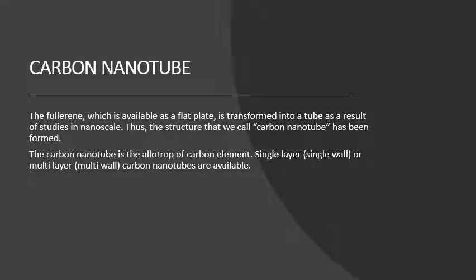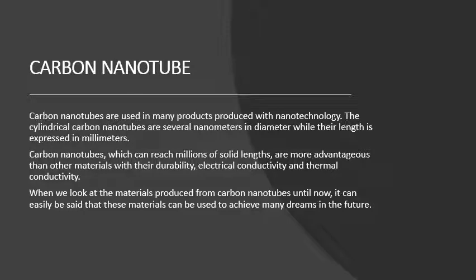Carbon nanotubes. The fullerene, which is available as a flat plate, is transformed into a tube as a result of studies in nanoscale. Thus, the structure that we call carbon nanotubes has been formed. The carbon nanotubes are used in many products produced with nanotechnology. The cylindrical carbon nanotubes are several nanometers in diameter but their length is expressed in millimeters.